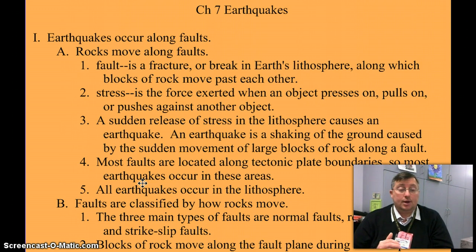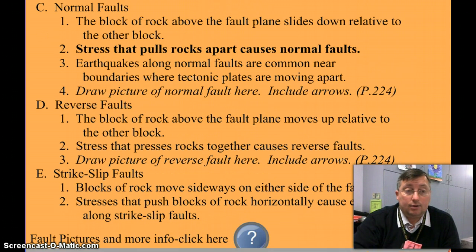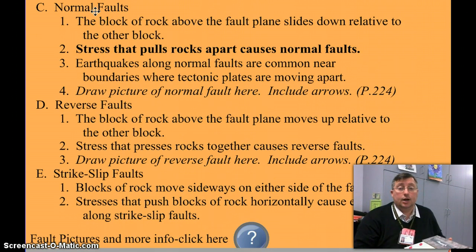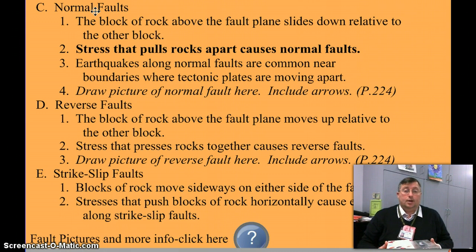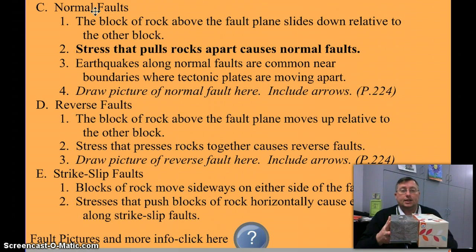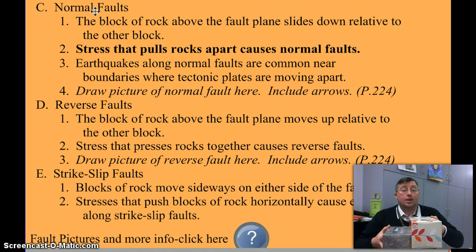They're classified by how they move. We talked about three different types, and they are: a normal fault. Those occur normally near where plates are moving apart. I demonstrated in class with these two blocks — two boxes of tissues. What happens is one of the blocks, as the rocks are trying to move apart, slides down relative to the other.